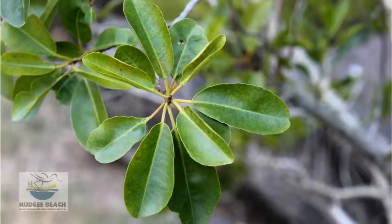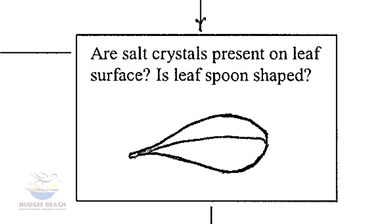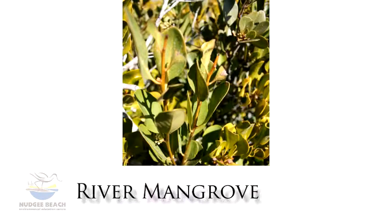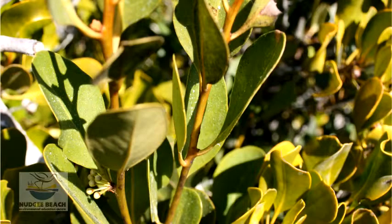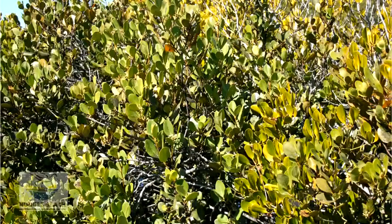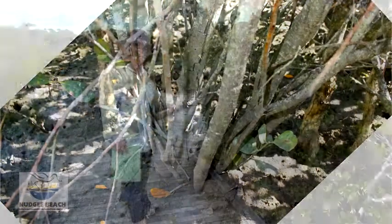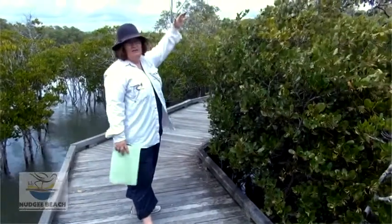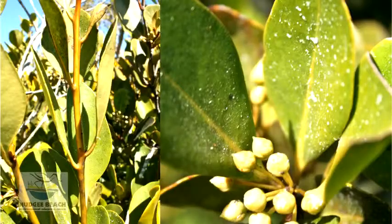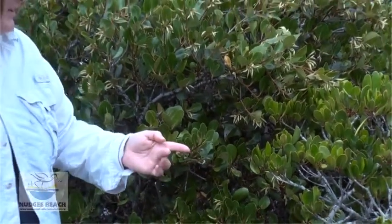If you look at the leaf and the sap is not there, then you ask the second question: are there salt crystals present on the top of the leaf surface? If so, you have a river mangrove. This leaf has a spoon shape and the river mangroves are shrubs or multi-trunking trees — they are quite small in comparison to most of the other trees in the forest. This tree grows along the edges of creek banks and rivers, hence its common name, a river mangrove. You will very rarely see it deep in the forest, except where there are areas of still water.